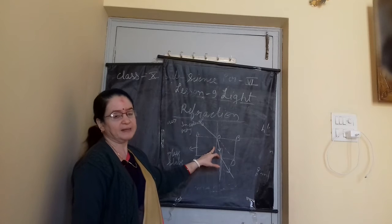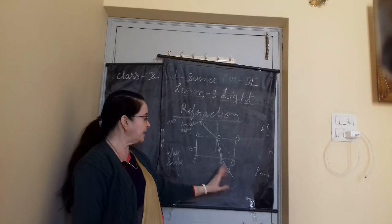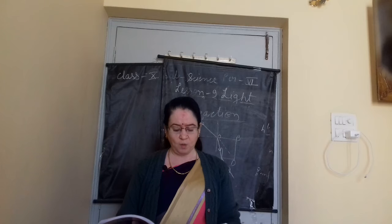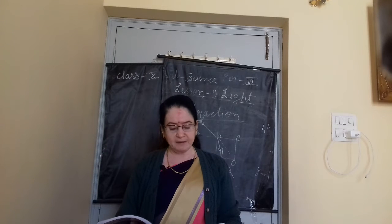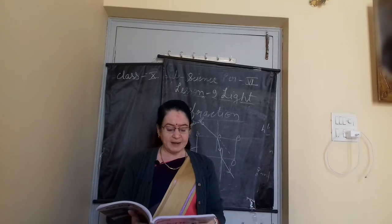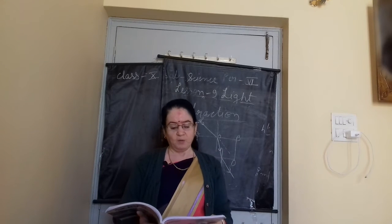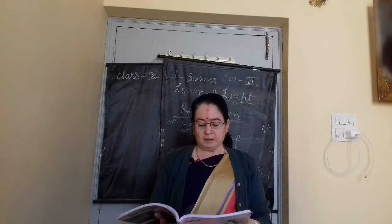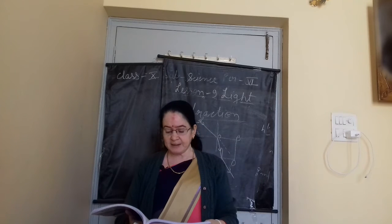When light goes from air into the glass slab, it bends towards the normal. When it comes back from the glass slab to air, it goes away from the normal. Here PO is the incident ray and OS is the emergent ray — they are both parallel to each other. OO' is the refracted ray. The emergent ray OS is parallel to the incident ray PO because the extent of bending at the opposite parallel faces AB and DC of the glass slab is equal and opposite.